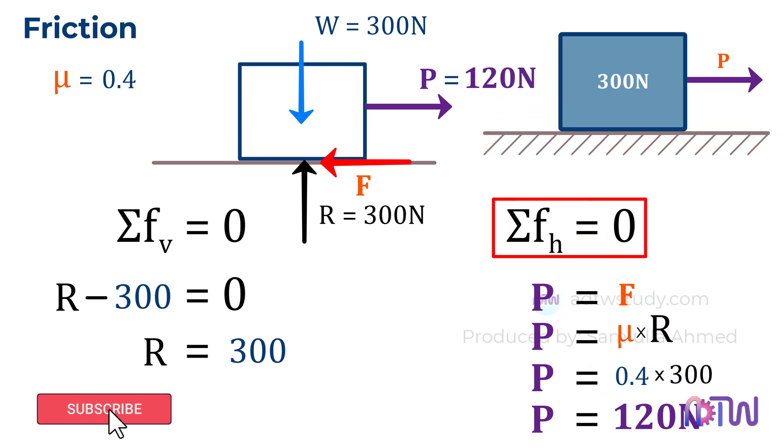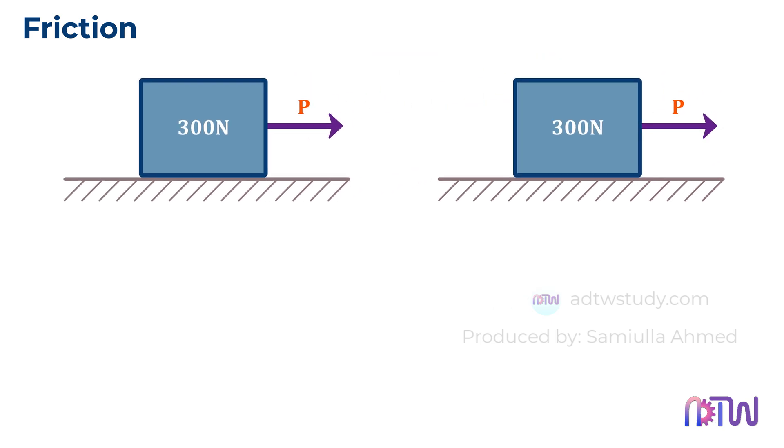I hope this helps you understand how to find the force required to move a box. This same example can have different variations. What if the force acting horizontally to the right is instead acting at an angle? In this situation, how do we find the value of P?